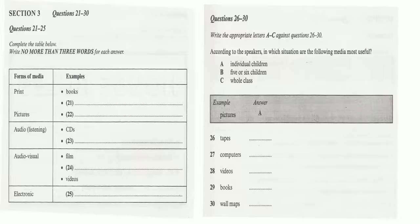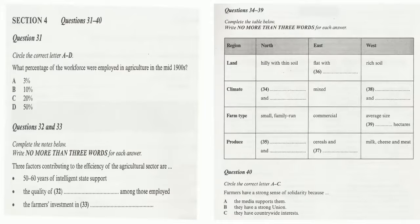That is the end of Section 3. You will now have half a minute to check your answers. Section 4. Section 4. You will hear a lecturer talking to a group of students at the beginning of a course in rural development. First, you have some time to look at questions 31 to 40. Now listen carefully to the talk and answer questions 31 to 40. I hope that this first session, which I've called an introduction to British agriculture, will provide a helpful background to the farm visits you'll be doing next week.